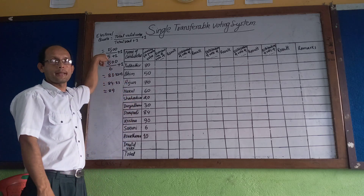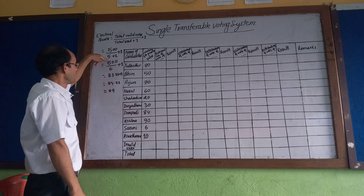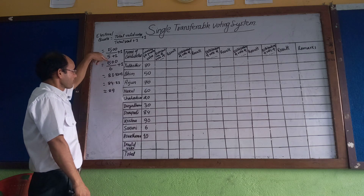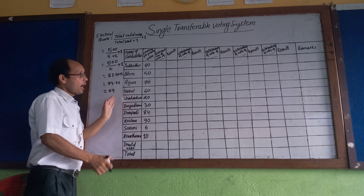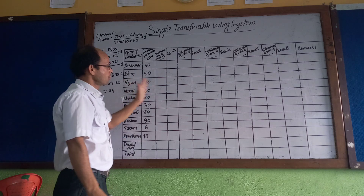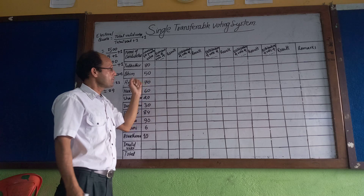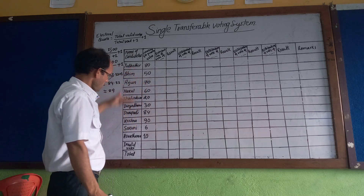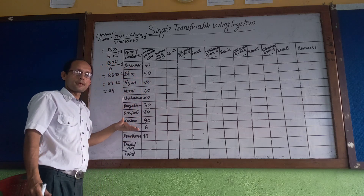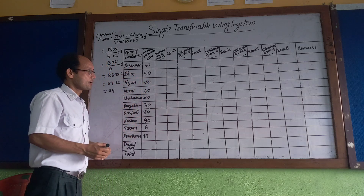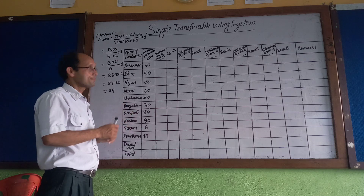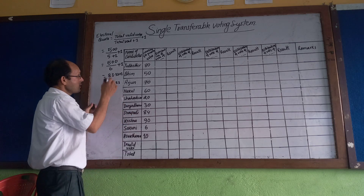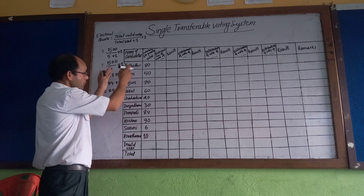In this example, there are 10 candidates in the constituency and 5 members must be elected. So a minimum of 84 votes is required for election. Now let's go through this practically to see how 5 members get elected.